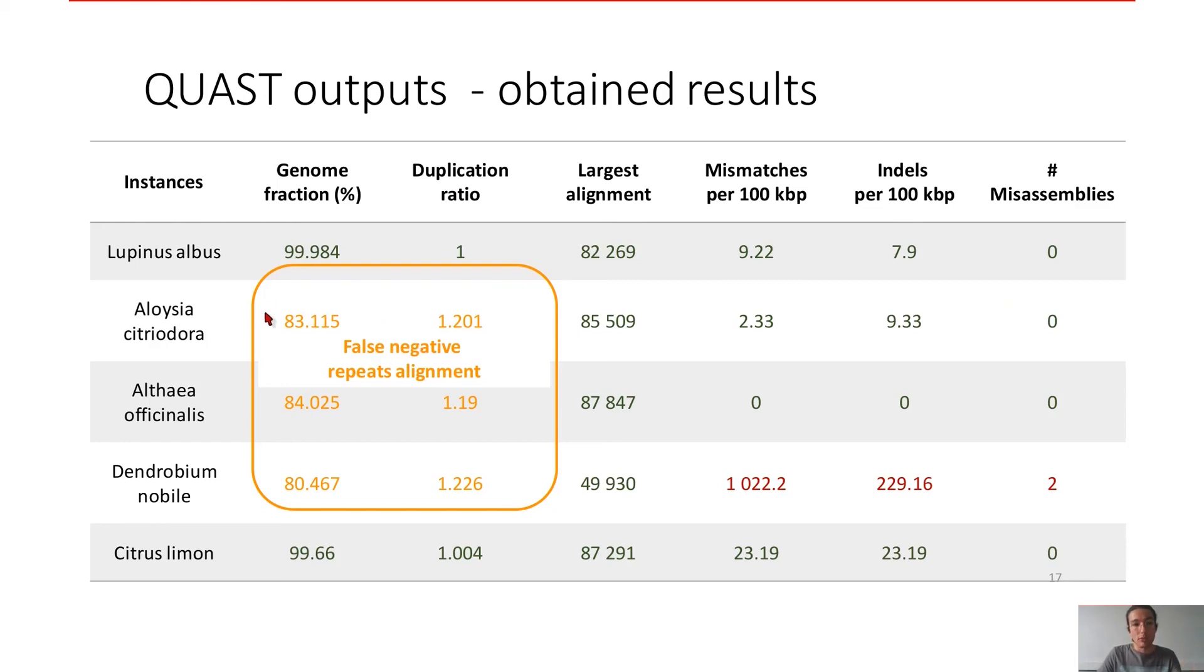Because Quast decided to align the two contigs representing the two repeats at the same positions on the reference genome. So that's why the genome fraction is lower and that's why the duplication ratio is higher. But if you do a BLAST to verify if the other repeats can be mapped to the other uncovered regions, the genome fraction will be higher and the duplication ratio will be equals to one. So it's a false negative result.